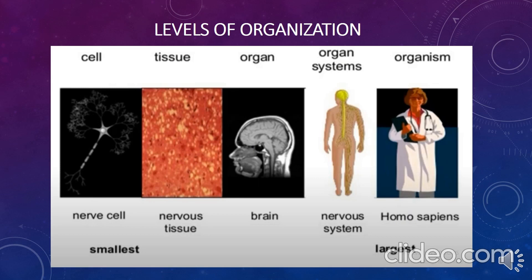Most multicellular organisms are organized in levels of organization, beginning with the cellular level. The next level is tissue — a group of cells with a specific function. For example, nerve tissue consists of a complex network of cells. Several types of tissues together make up a structure called an organ. Several organs that together carry out a major function make up an organ system, such as the nervous system. A multicellular organism's development and survival depend on the functions and interactions of its many cells.